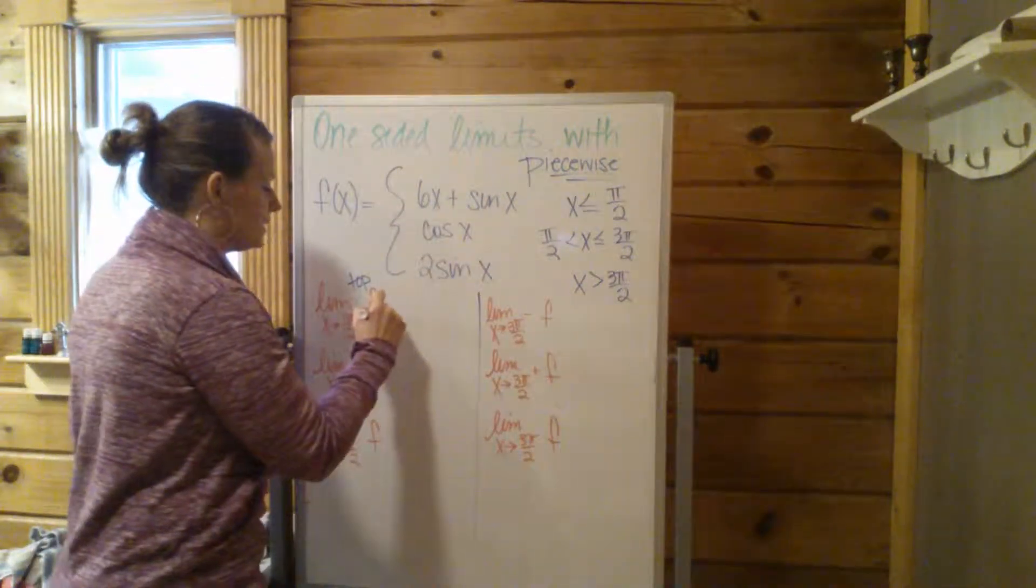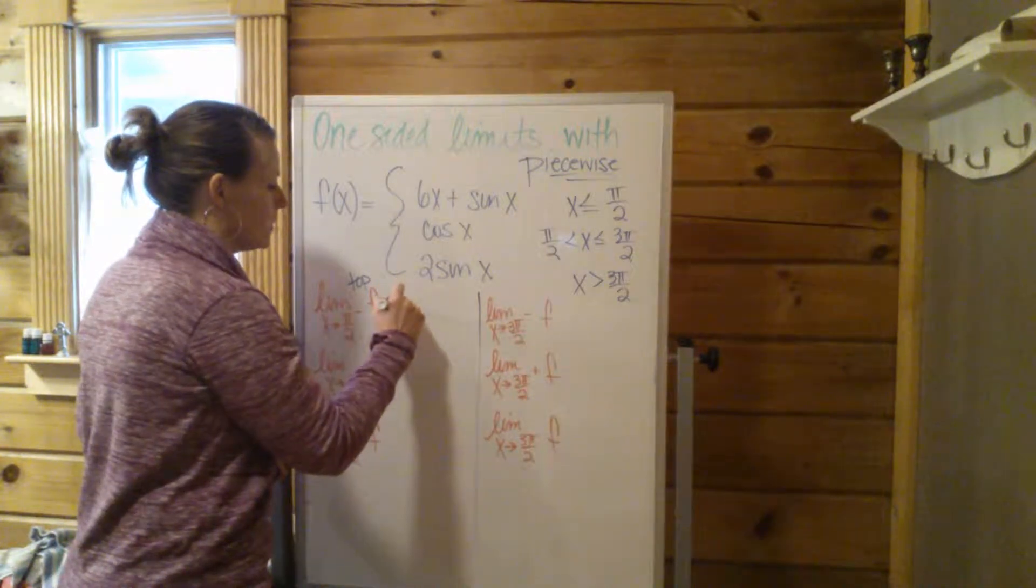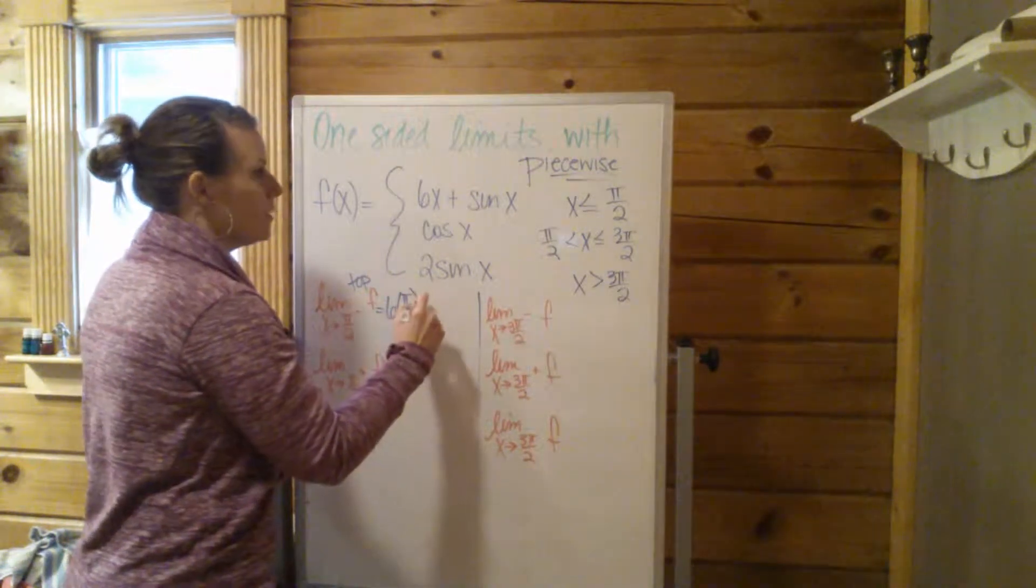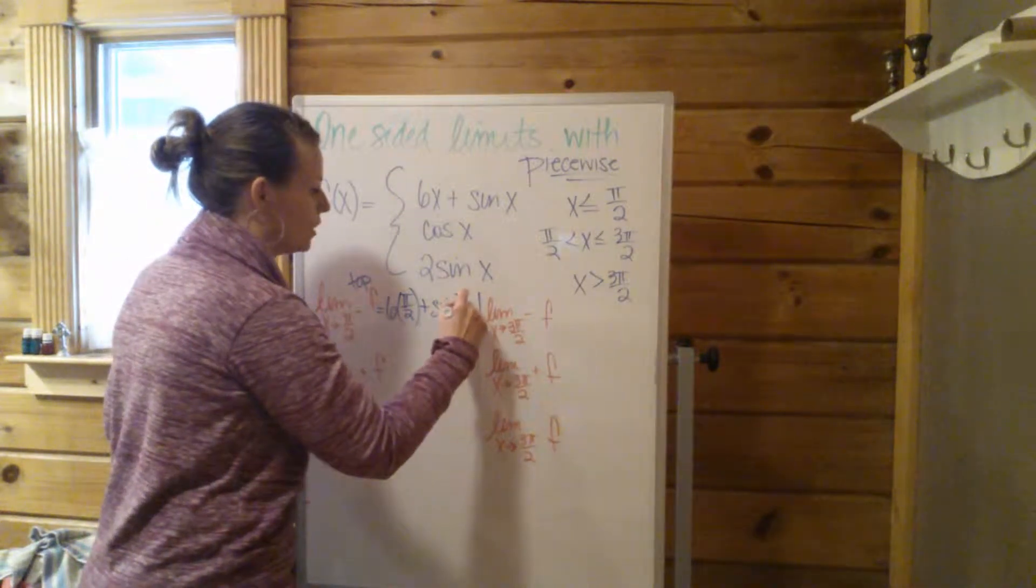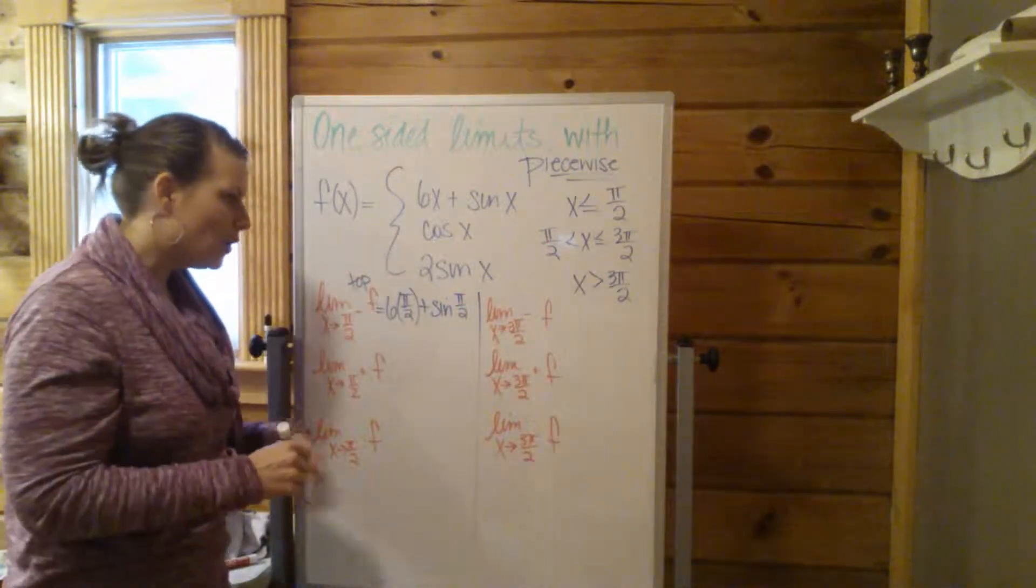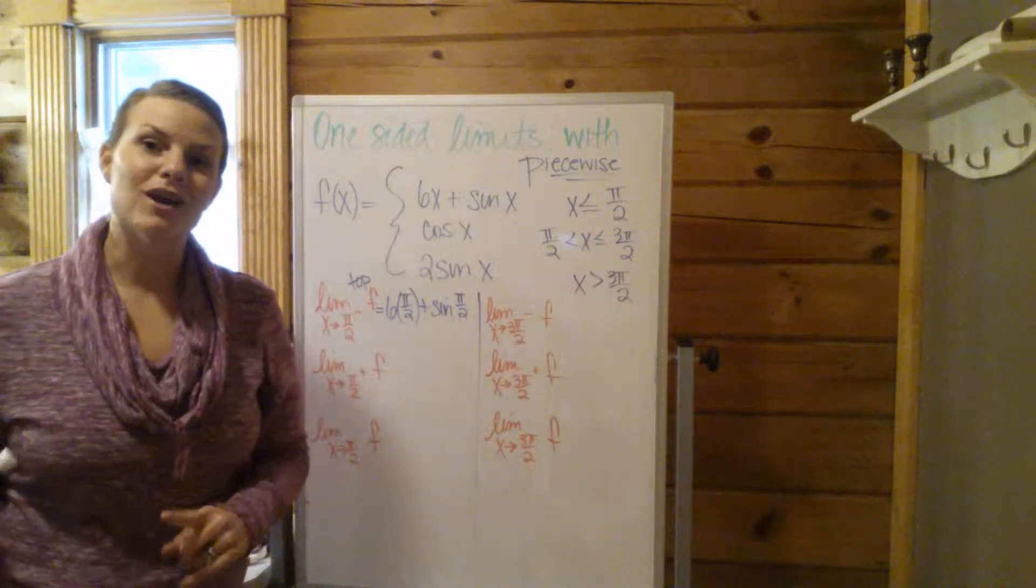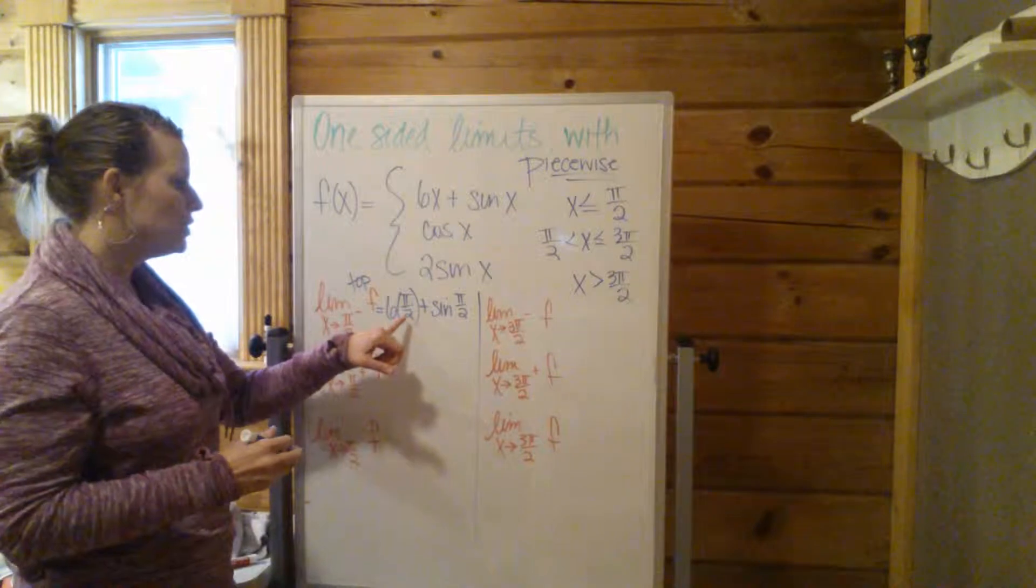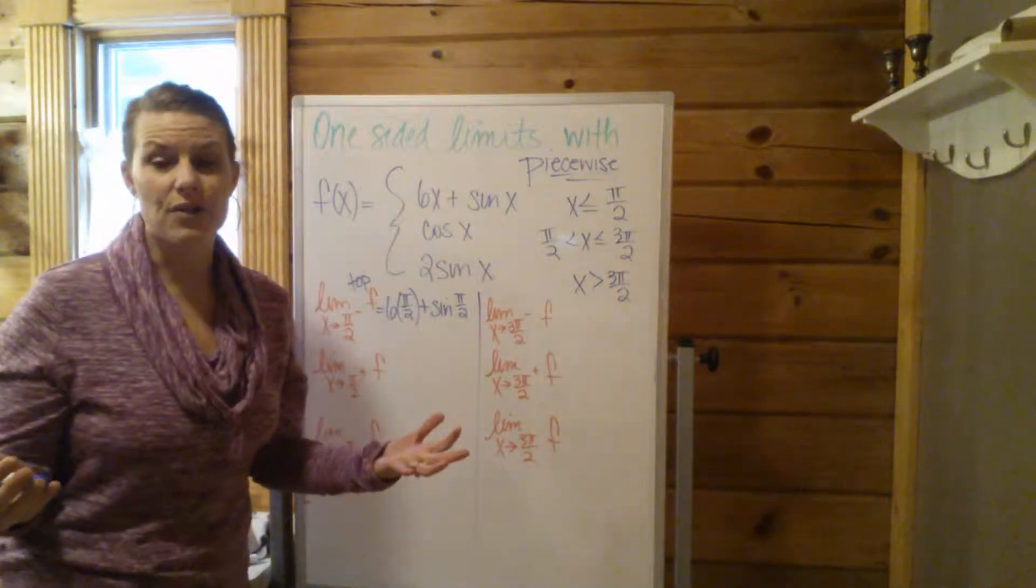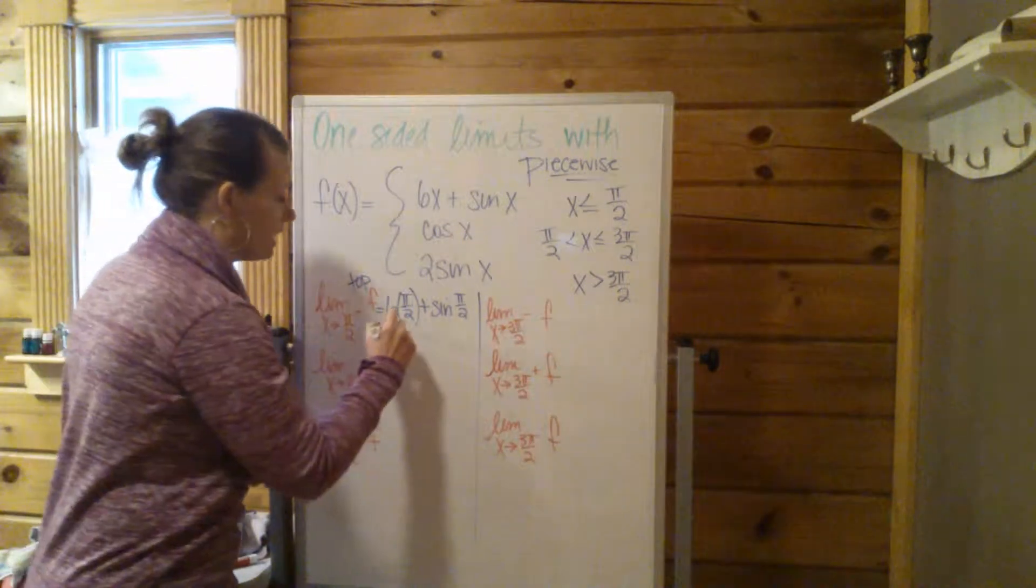So this is going to be 6 times π/2 plus the sine of π/2. Now we've got to go back and remember our trig, our unit circle, things like that. Now 6π/2, not much you can do with that other than reduce. That's just going to be 3π/2, correct?